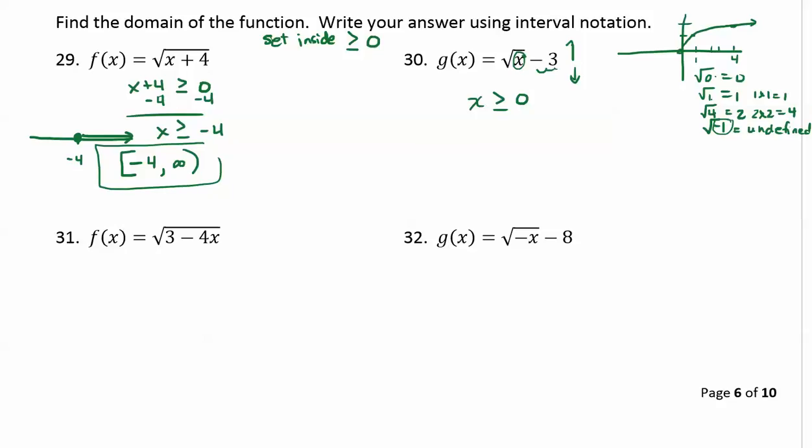And that would be the domain: x must be greater or equal to 0. So on a number line the graph starts at 0, goes forever to the right, giving us the interval brackets 0 comma infinity with parentheses.